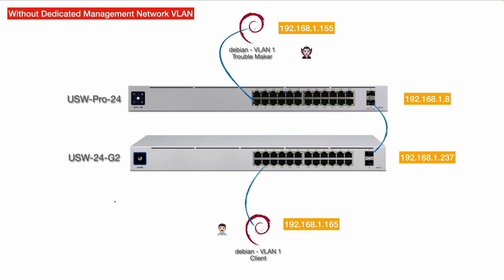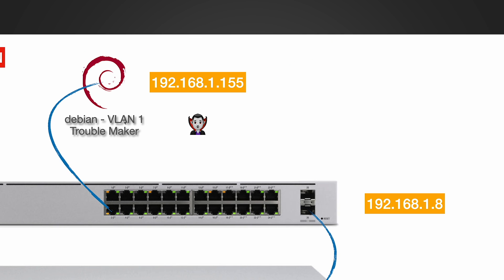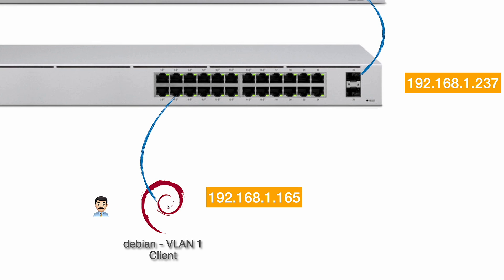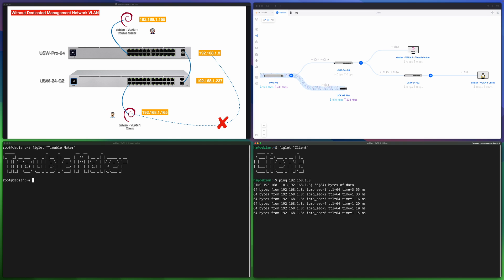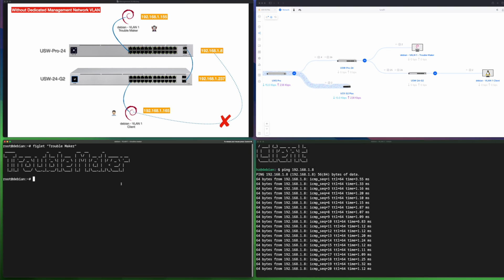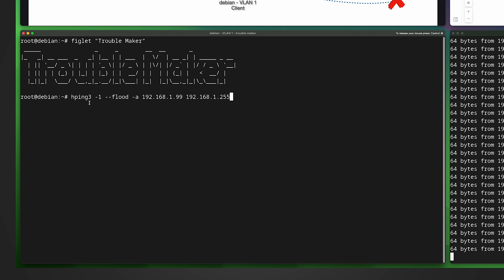Another problem of sharing the same VLAN with client computers is that client device activities may impact the management VLAN so that you can't even access your switches. For example, I have two switches whose management VLAN is the default VLAN. In the same VLAN I have one Linux machine that will cause trouble, and another Linux machine I'll use to try to manage my switches. Both UniFi switches and the two Linux clients are in the same default VLAN. The left-side Linux is ready to make some trouble — first, on the right side let me ping the Pro UniFi switch continuously. The latency is about one millisecond — pretty good.